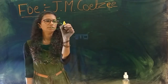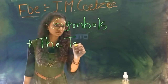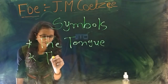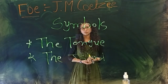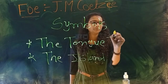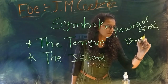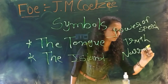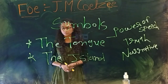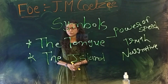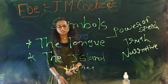Let's talk about the symbols of the novel. The first symbol is the tongue and the second is the island. The tongue is one of the strongest symbols in the novel, representing the power of speech, truth, and narrative. The island in Coetzee's novel doesn't work as an idealized utopian space as in Defoe's novel; instead it works as a dystopia, outside of civilization and human society.